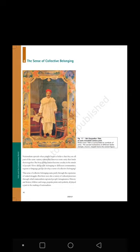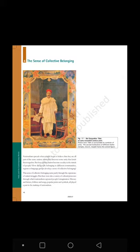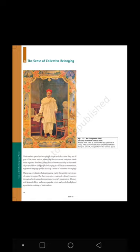The Sense of Collective Belonging — Take a look at Figure 11, Bal Gangadhar Tilak, an early 20th-century print. Notice how Tilak is surrounded by symbols of unity — the sacred institutions of different faiths: temple, church, and masjid frame the central figure. Nationalism spreads when people begin to believe that they are all part of the same nation — when they discover some unity that binds them together. But how did the nation become a reality in the minds of people? How did people belonging to different communities, regions, or languages develop a sense of collective belonging? The sense of collective belonging came partly through the experience of united struggles. But there were also a variety of cultural processes through which nationalism captured people's imagination. History and fiction, folklore and songs, popular prints and symbols all played a part in the making of nationalism.